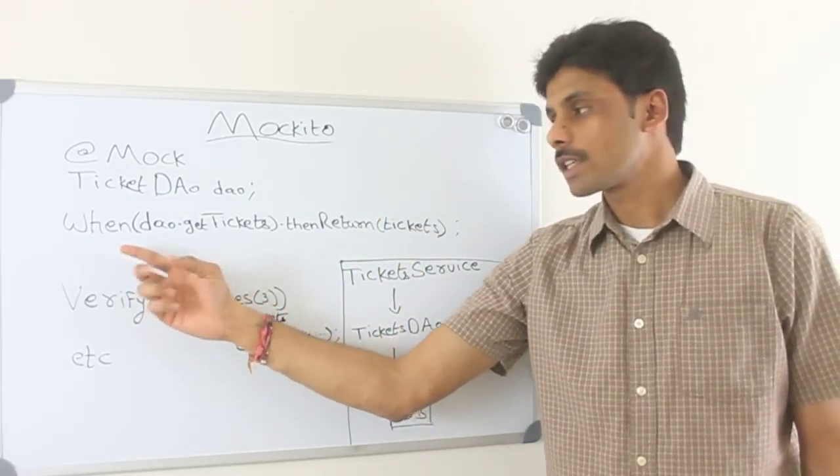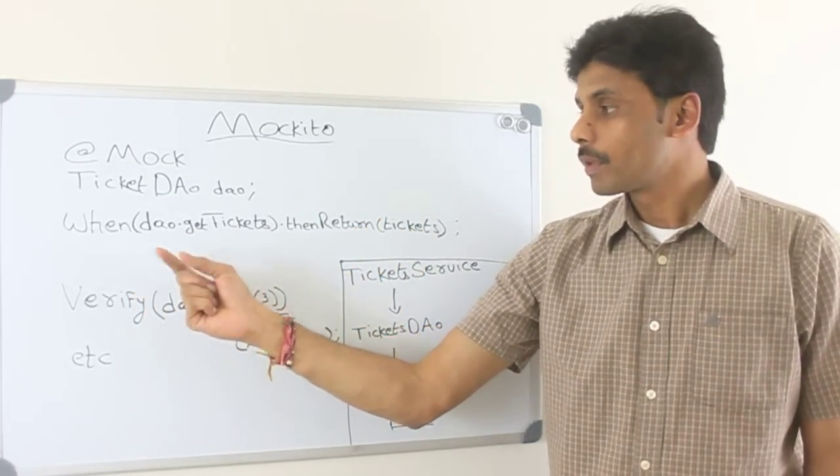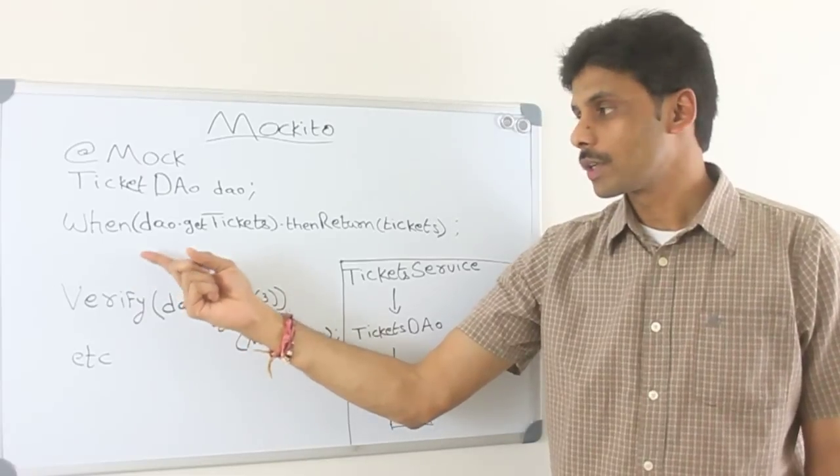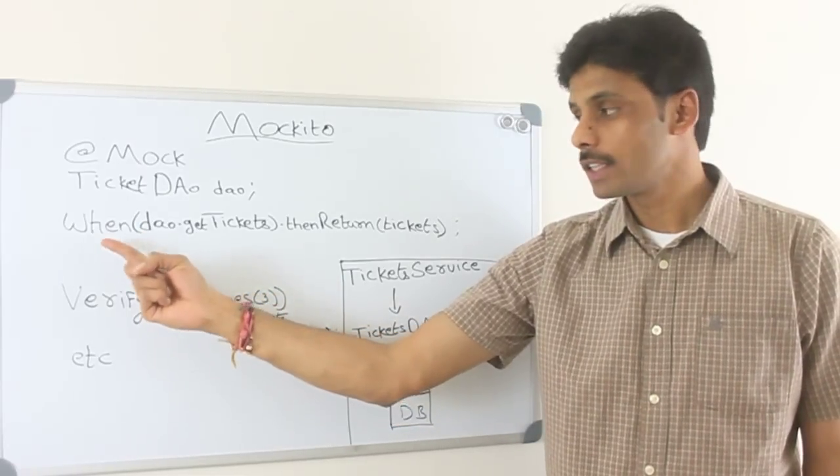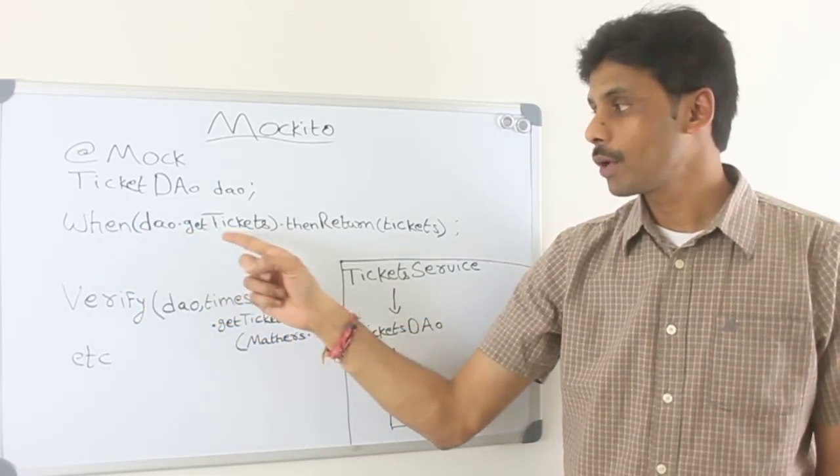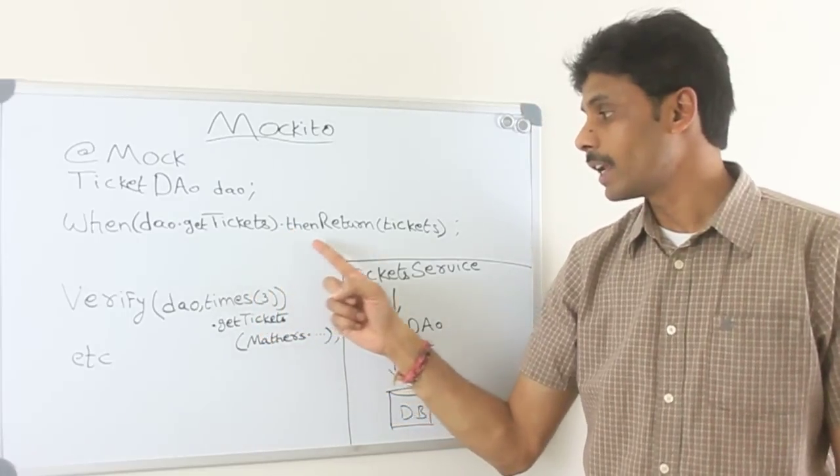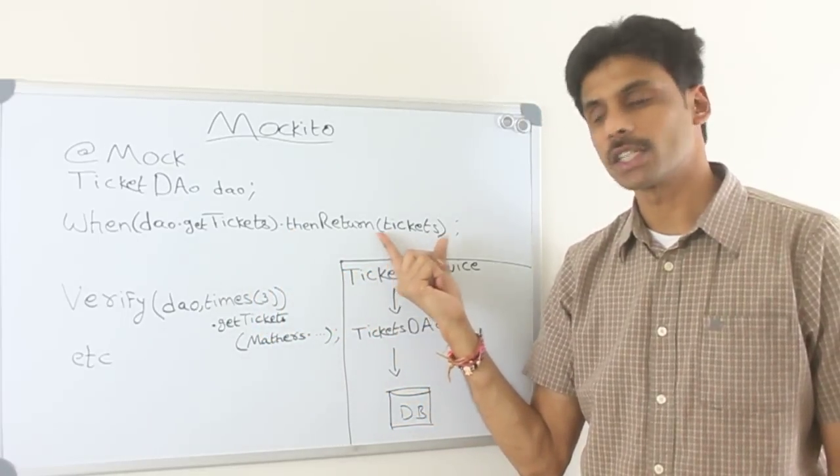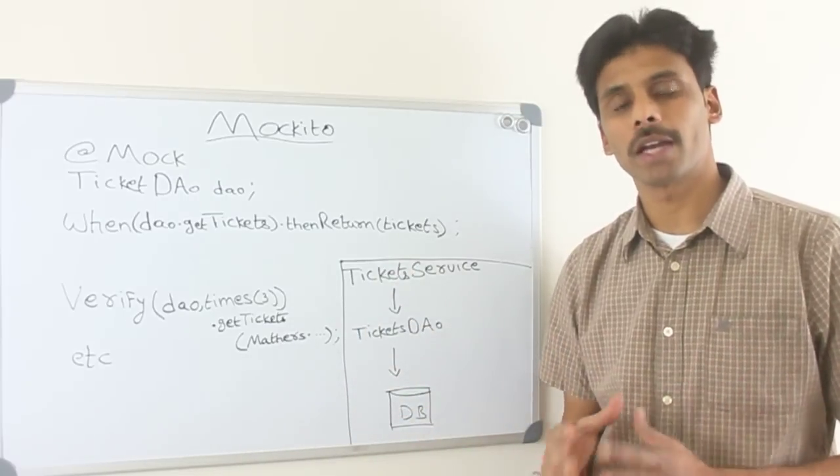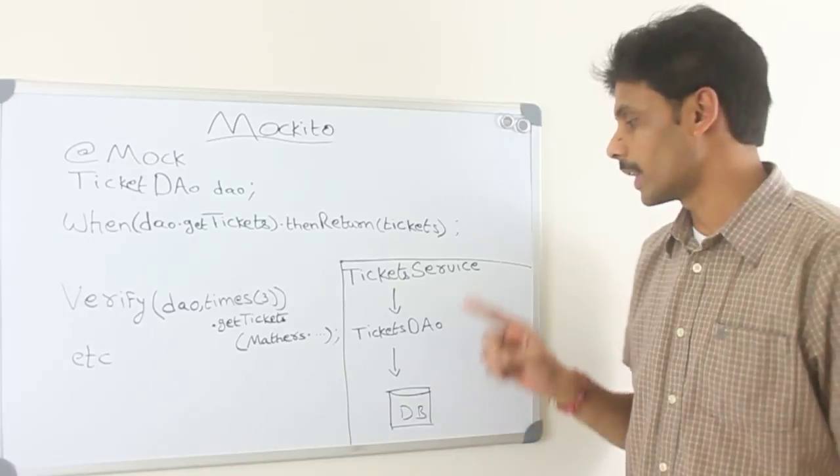And then Mockito gives us several static methods, which allows us to mock the calls. So in this case, I am saying when, this is Mockito's method, DAO.getTickets is called, then return the bunch of tickets, which could be an array list or a set, which we prepare in our unit test.